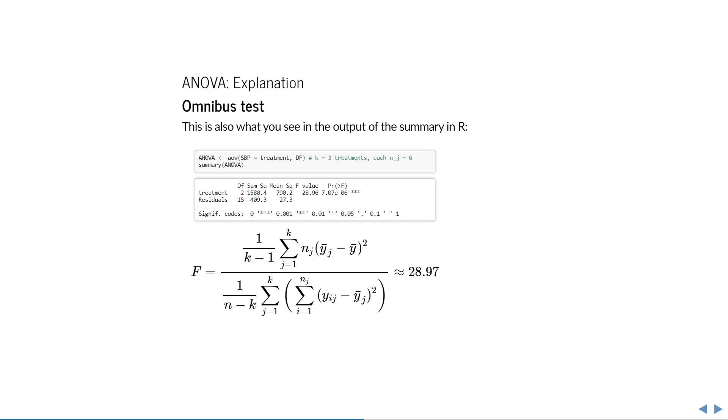The first number shown then is the degrees of freedom for treatment. We have 3 group means to calculate the variance from, and we have already used 1 to estimate the overall mean, so there are k minus 1 equals 2 degrees of freedom.